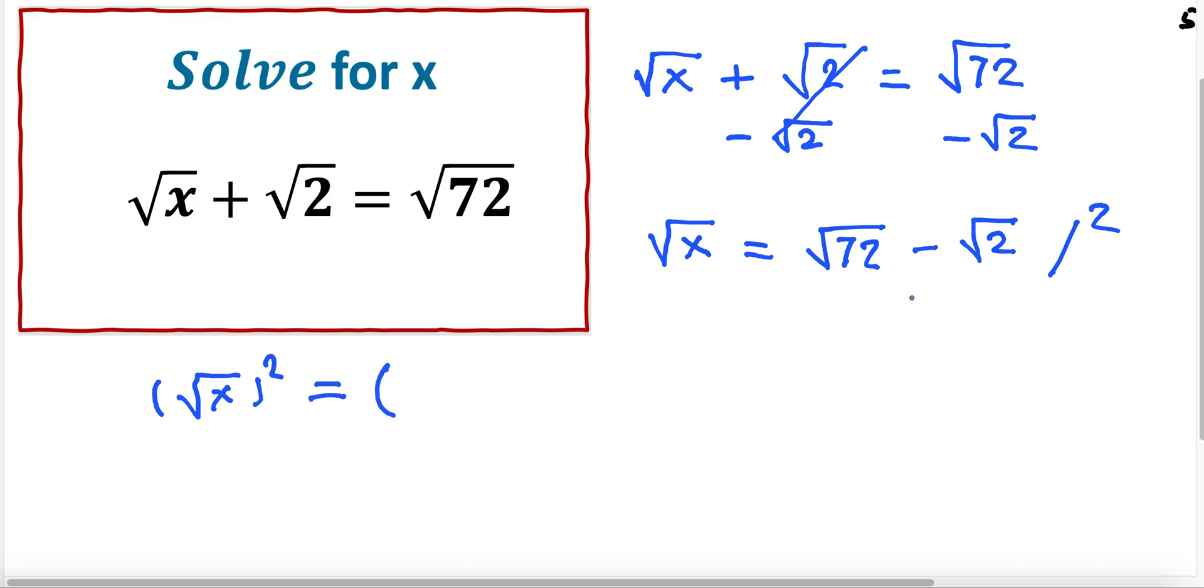And now what's gonna happen here? The square here with the square root, we can simplify, and what remains is just x. And now this one we can raise to the square, and if I'm raising the 72 to the square...